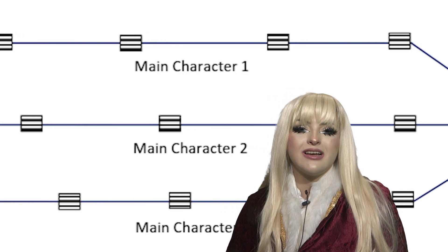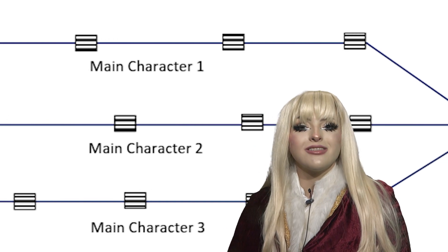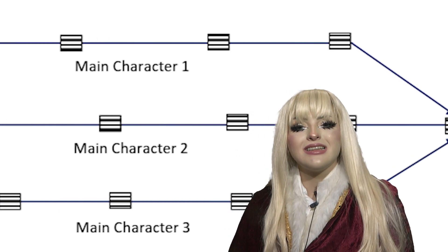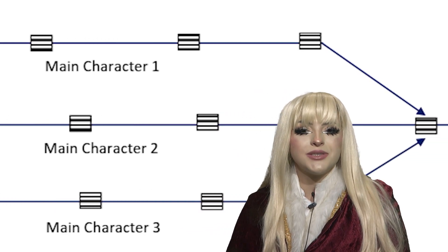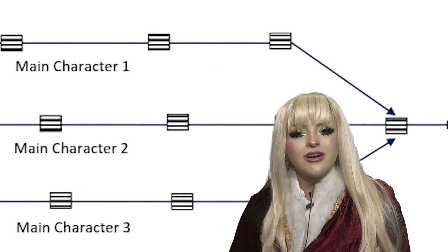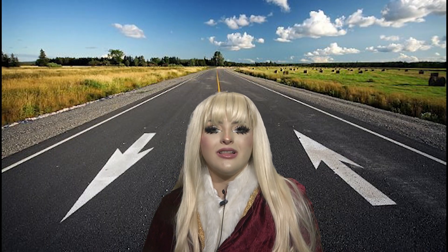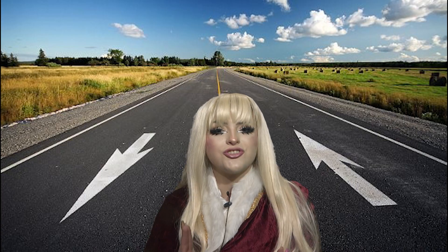I just want to clear up some things about parallel storytelling before I start explaining everything. In parallel storytelling, while multiple storylines can share similar themes, it doesn't necessarily mean the storylines perfectly match up with one another. Imagine the metaphorical storylines being more of a two-way street and less of a racetrack.